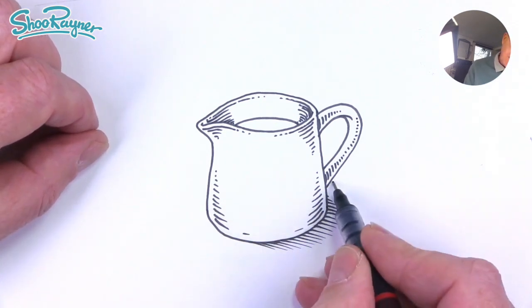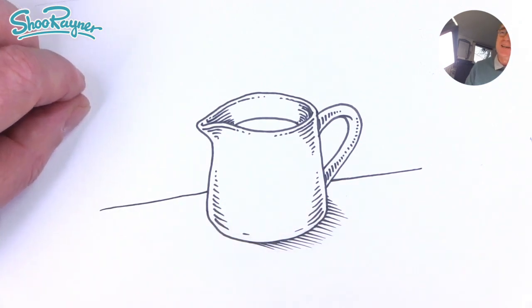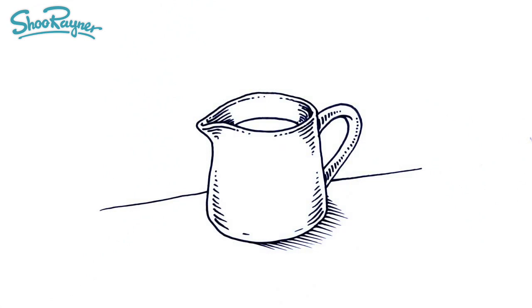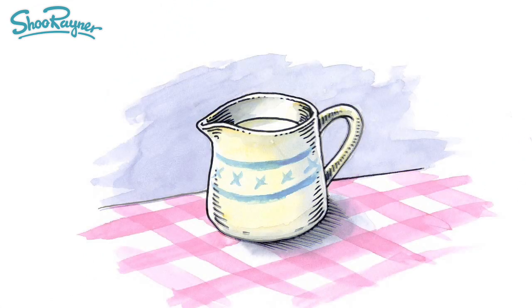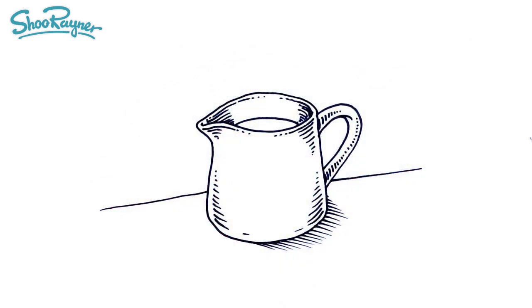And then you can put the edge of the table in about there like that, just to put it on the table. And there you go, how to draw a milk jug. If you'd like to colour this in watercolour, as I said, come and join me on Patreon. Make sure you are subscribed to the Shoe Render Drawing channel and keep coming back for lots more drawing every week.